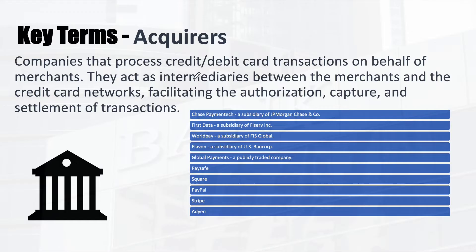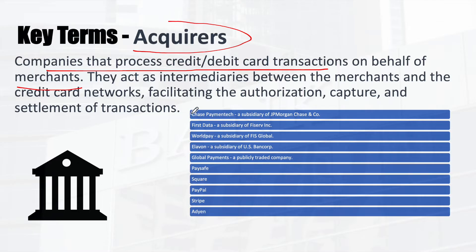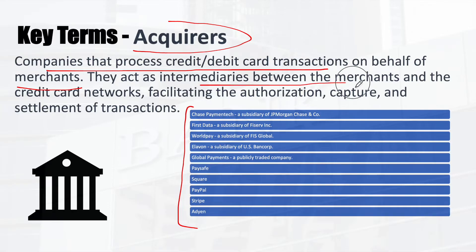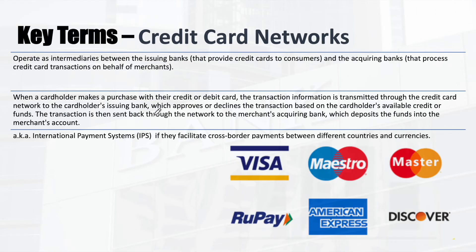Acquirers are the backbone of merchant processing. They are the ones which provide point-of-sale devices to merchants and facilitate the payment processing. They provide credit and debit card transaction services on behalf of merchants. Acquirers act as intermediaries between the merchants and the credit card networks, facilitating the authorization, capture, and settlement of transactions.